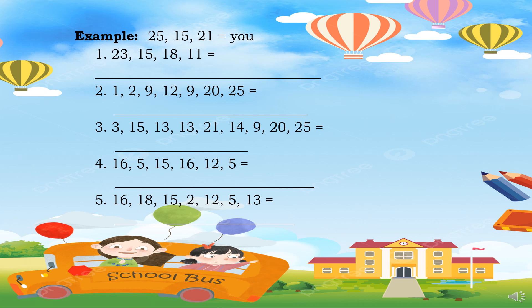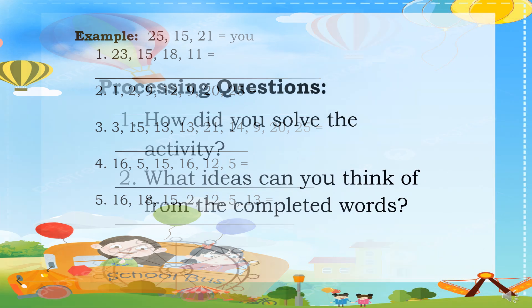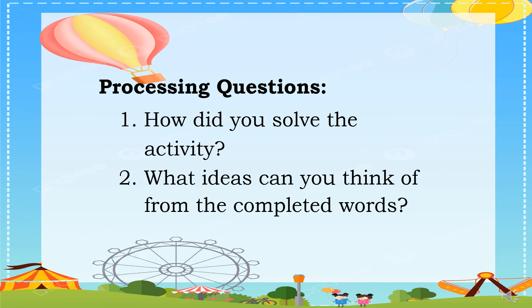The activity provides number combinations to decode into words. For example: 25-15-21 equals 'YOU.' Items 1 through 5 each present a series of numbers corresponding to letters that spell out words for you to decode. After finishing the activity, answer these two processing questions: Number 1 — How did you solve the activity? And Number 2 — What ideas can you think of from the completed words?